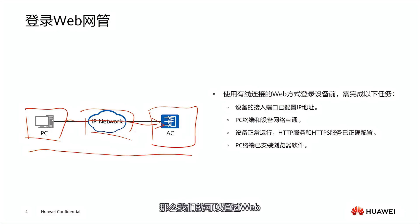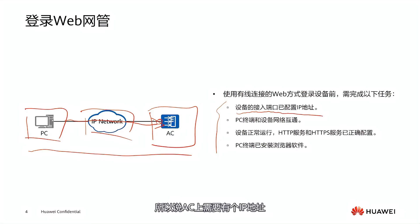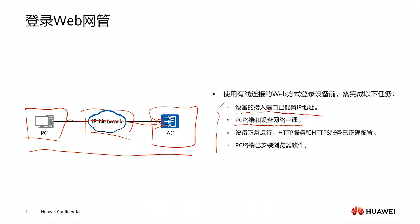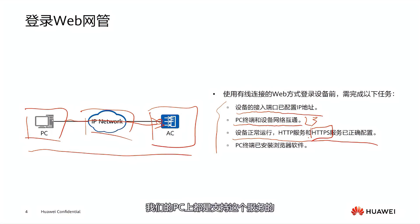There are four tasks we need to complete in advance. First, the device access port must be configured with an IP address — our AC needs an IP address because the PC needs to access it. Second, the PC terminal must be interoperable with our devices, meaning interconnection at the third layer. Third, the HTTP and HTTPS services must be enabled — in our demonstration, we are using the HTTPS service, and generally this service is supported on our PCs. Finally, we need browsing software on our PC — any browser, whether IE or Chrome, can be used.